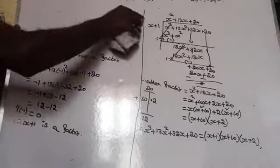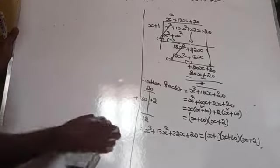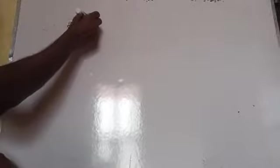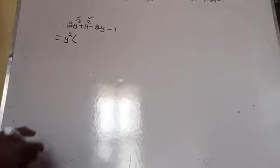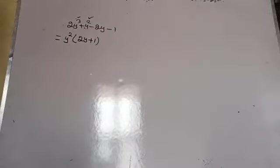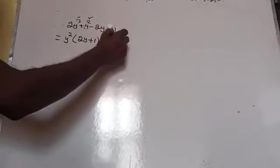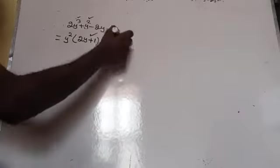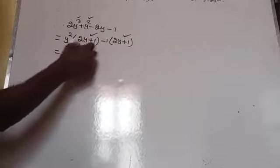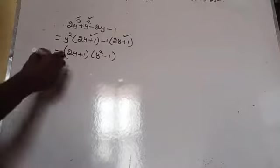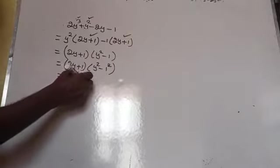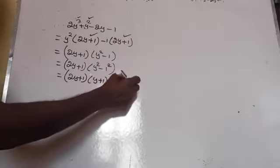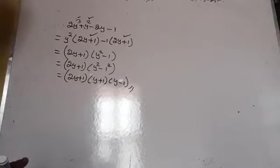Next, factorize the cubic polynomial 2y³ + y² - 2y - 1. This is simple: from the first two terms, take y² common to get y²(2y + 1). From the last two terms, take -1 common to get -1(2y + 1). Now take (2y + 1) common: (2y + 1)(y² - 1). Since y² - 1 = (y + 1)(y - 1), the factors are (2y + 1)(y + 1)(y - 1).